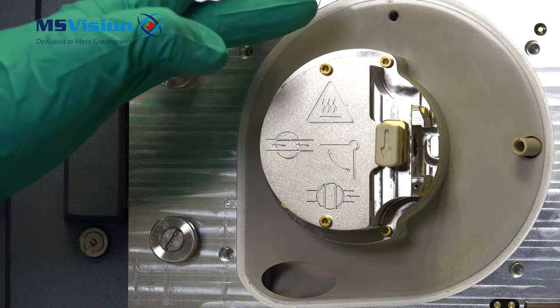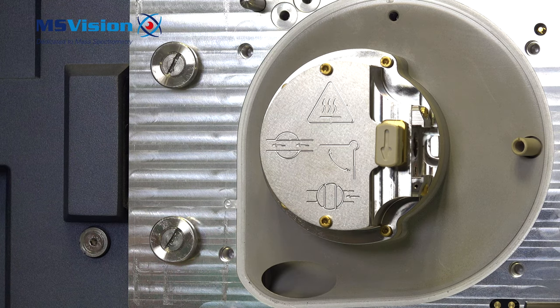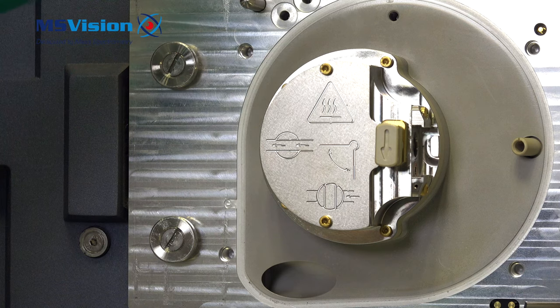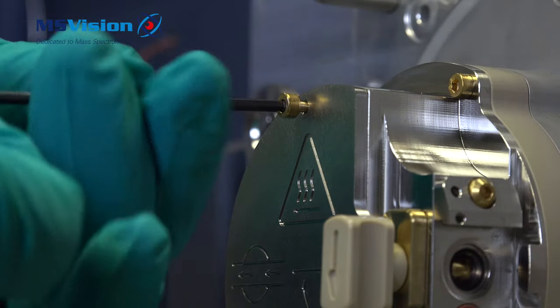Ensure that the source block has cooled down as it can be very hot before we can remove the source. For safety, please take out the mains power lead. We can now open to show the heater and remove the source block.